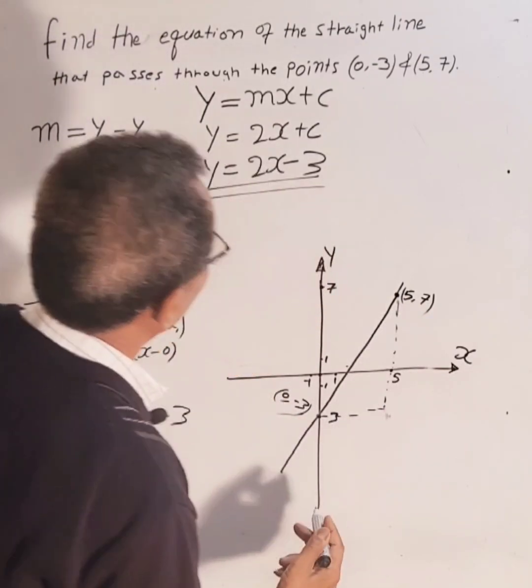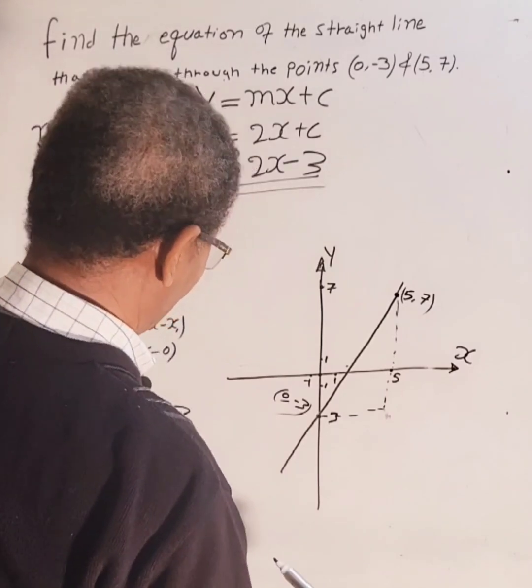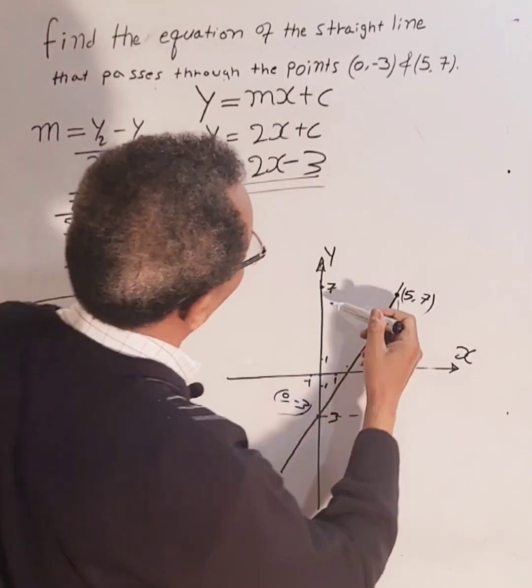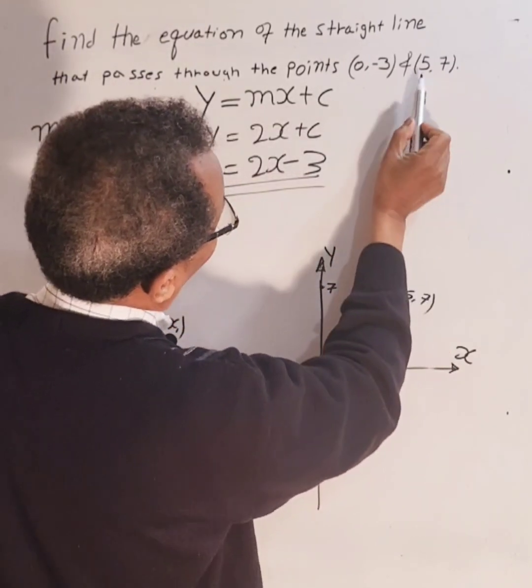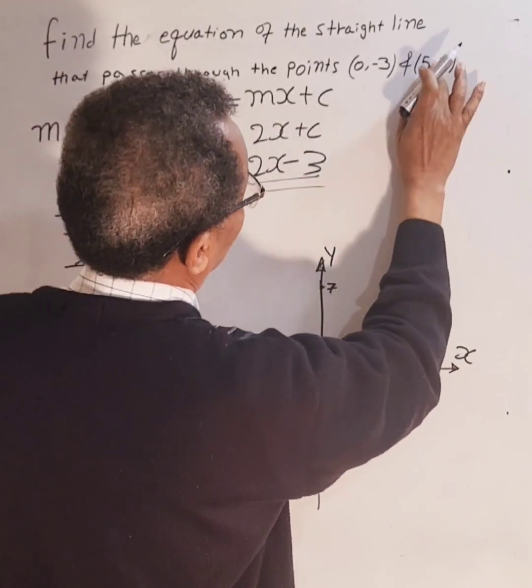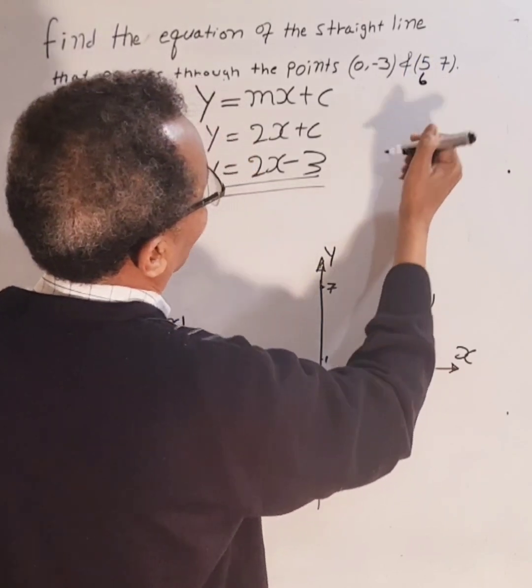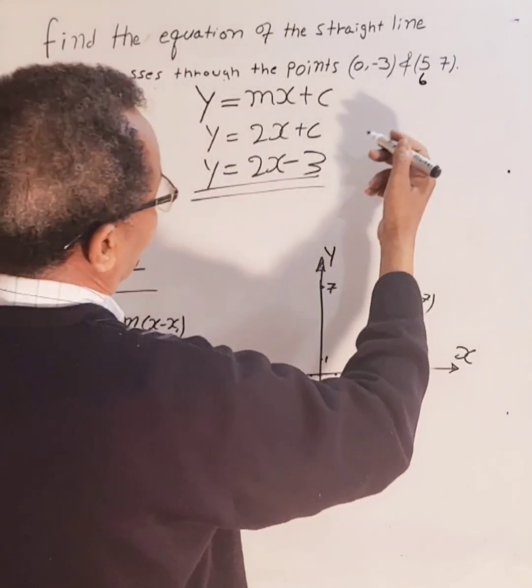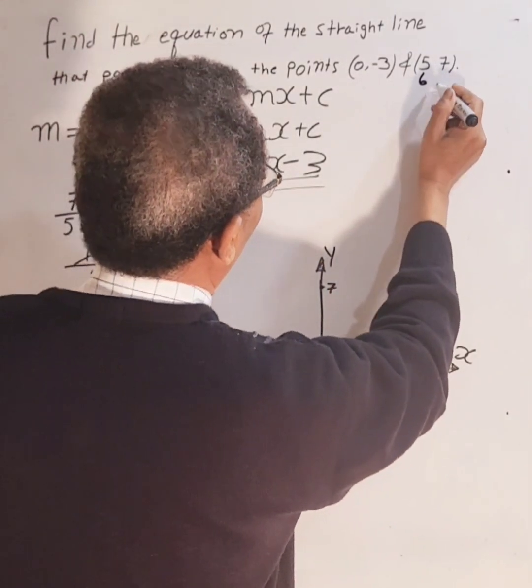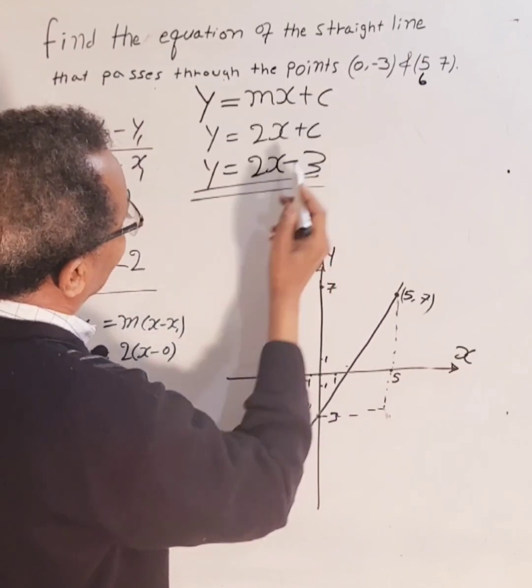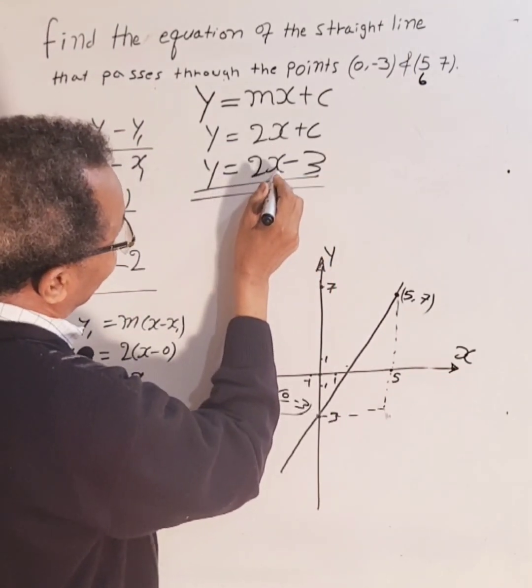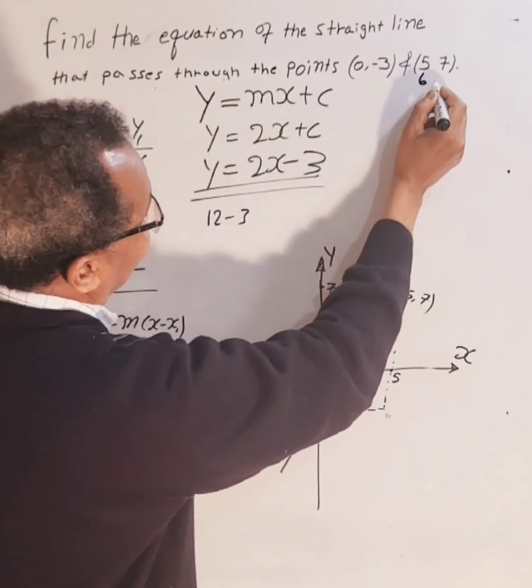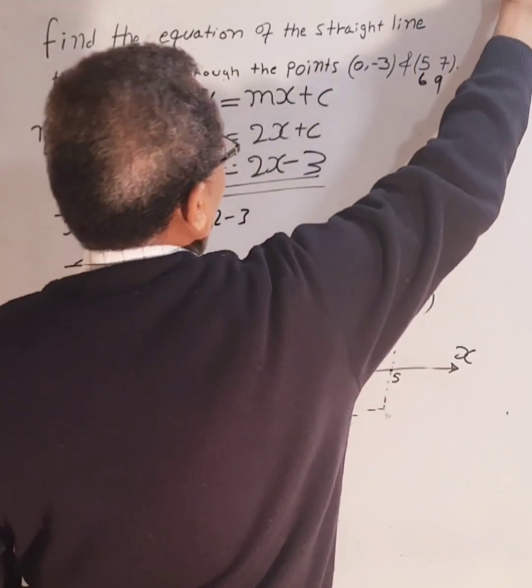So this is the gradient. The gradient is 2, which means for every unit of x, two units of y. For example, if the value of x changes here to 6, one unit, so this will increase by two values. That means it will be 9. We can check it: if x is 6, so 2 times 6 is 12, take away 3 is 9. And so on.